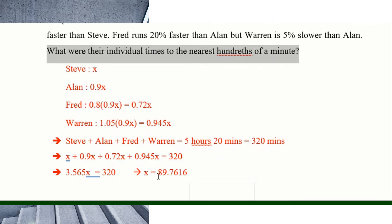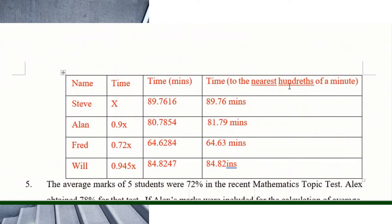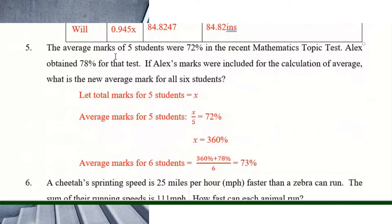Solving for x gives Steve's time as 89.7616 minutes. The question asks for everyone's individual times. For Ellen, substitute x — always carry four decimal places to ensure accuracy — so Ellen's time is 0.9 times 89.7616. Continue for Fred using 0.72x and Warren using 0.945x, substituting the four-decimal value each time. You don't need to draw a table; just multiply and write the answer.